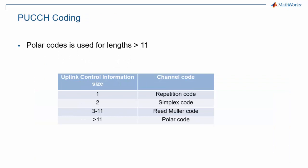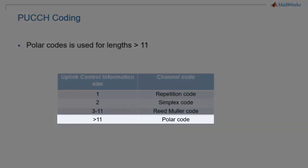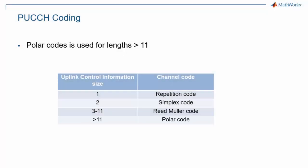You will often hear that control uses polar coding, but this is only strictly true for payloads greater than 11 bits. For shorter payloads, other schemes are used, including repetition, simplex code, and Reed-Muller code.